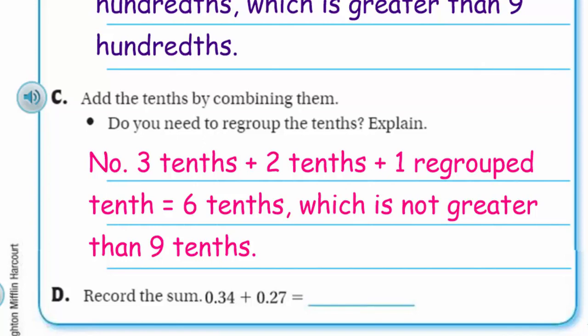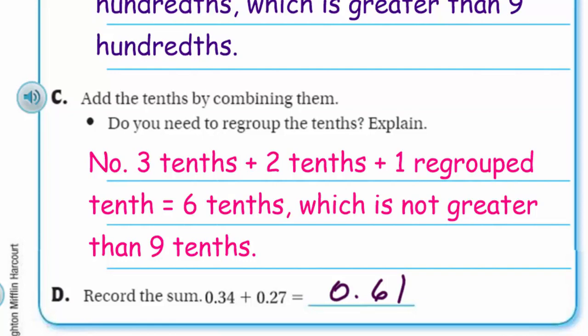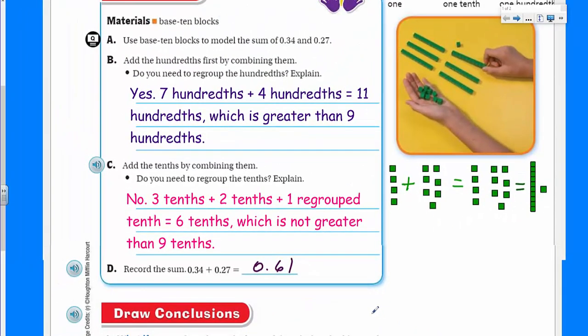Add the tenths by combining them. We have a 3 in the tenths place and we have a 2 in the tenths place. We do not need to regroup because 3 tenths plus 2 tenths plus that one regrouped tenth is equal to 6 tenths, which is not greater than 9 tenths.